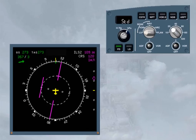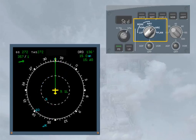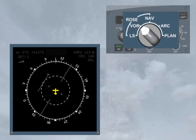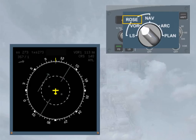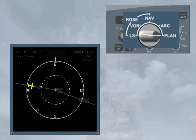There are five display modes available on the ND. They are selected by the mode selector on the EFIS control panel. There are three basic navigation display modes, which display in the background a 360-degree compass rose. Note, for training purposes, the other information has been dimmed. A 90-degree segment arc. A map plan with north at the top.